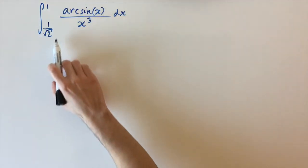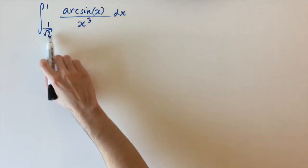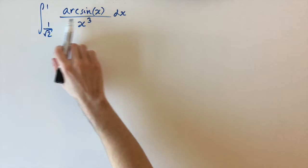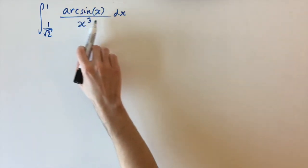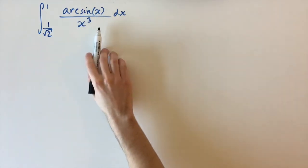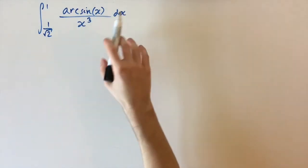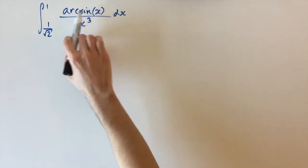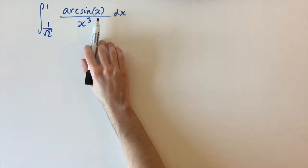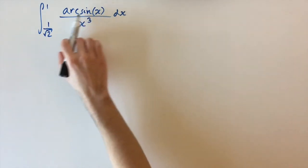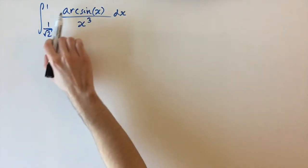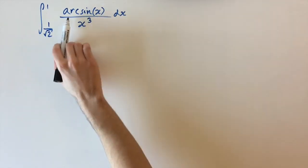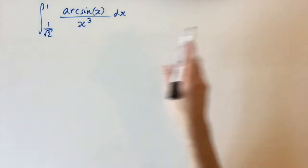We're looking at the integral between the limits of 1 over root 2 and 1 of arcsin(x) divided by x cubed dx. This is the term we really want to get rid of, so we're going to start off with a substitution.